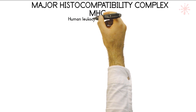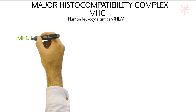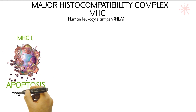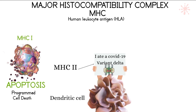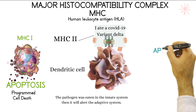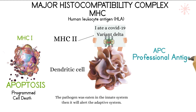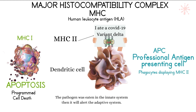MHC2 stands for Major Histocompatibility Complex, also known as Human Leukocyte Antigen, abbreviated as HLA. A cell invaded by a pathogen or showing cancerous activity will present its problem on a protein called MHC1, which attracts specific lymphocytes to induce apoptosis. When a phagocyte eats a pathogen, it disintegrates the germ's proteins and presents them on its surface as MHC2, alerting the adaptive system. A cell carrying MHC2 is called a professional antigen-presenting cell.